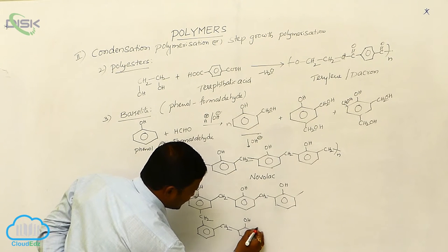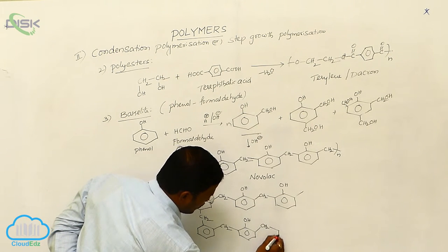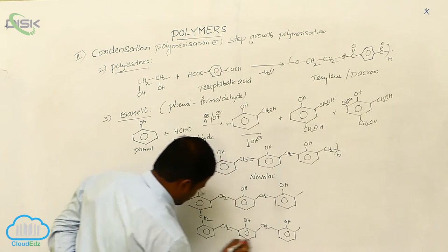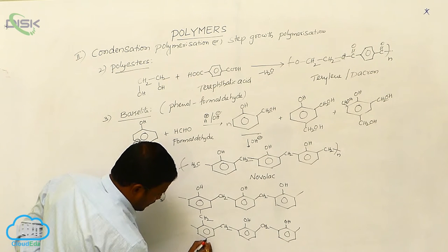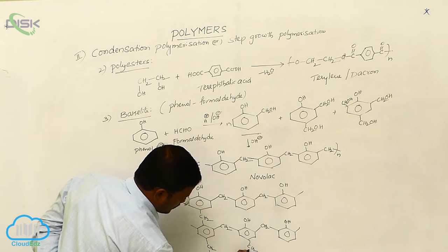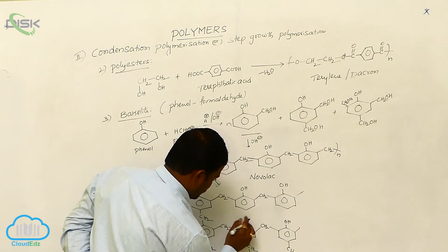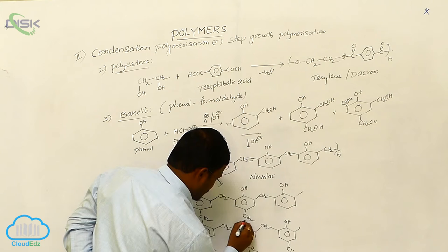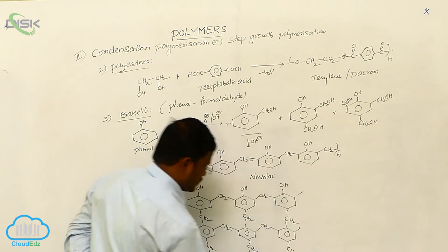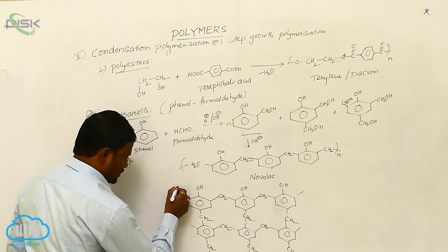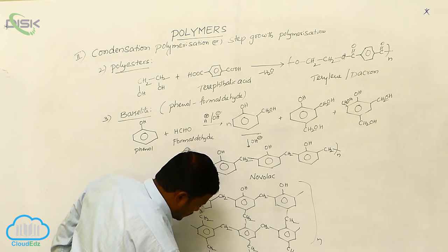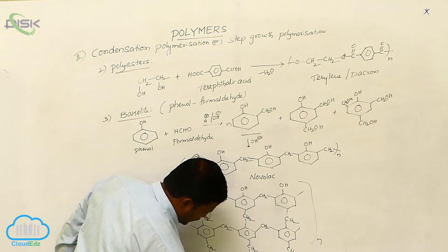The resulting species is called Bakelite, OH CH. So these are connected with each other. It continuously takes place n times. The resulting polymer is Bakelite.